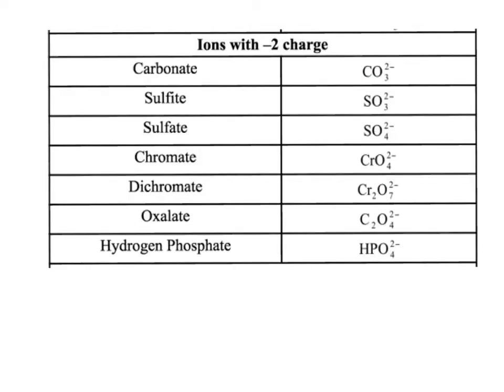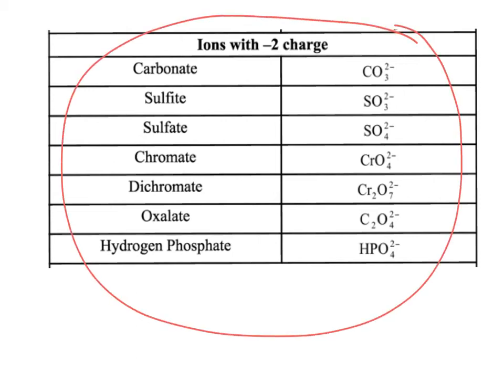This will be your second quiz — all the ions that have a minus 2 charge. The second quiz will have 7 things on it. You'll need to know that chromate is CrO4 2-, and dichromate is Cr2O7 2-. Carbonate and oxalate are often confused by students, so pay attention to those.